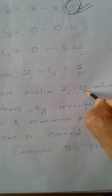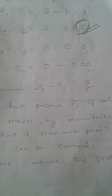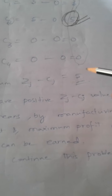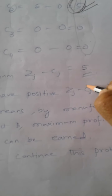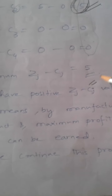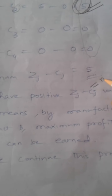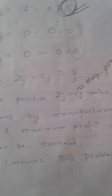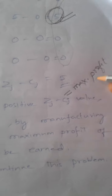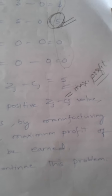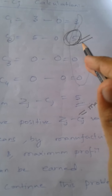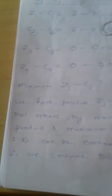Zj minus Cj means net profit — the maximum profit that the firm can earn. So this is the reason why we are selecting the second column for our next calculation.